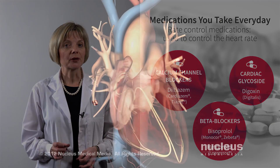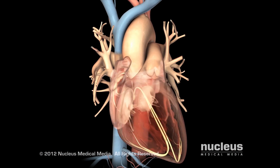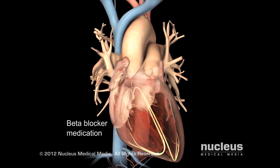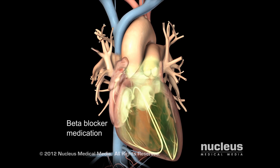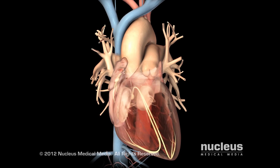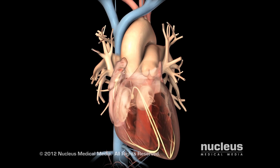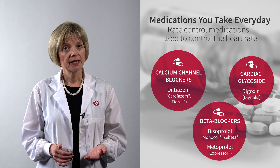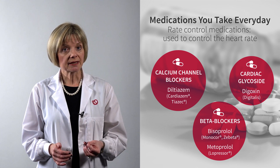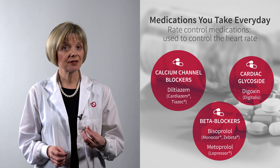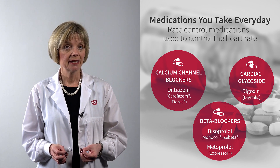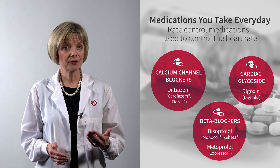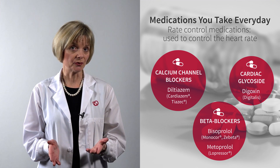They work by reducing the number of impulses that travel from the atria through the AV node to the ventricles. It is important that your heart rate is not too fast for a long time as the heart muscle can become weak. The weakness of the heart muscle can lead to developing heart failure. These types of medications can help prevent this from occurring.